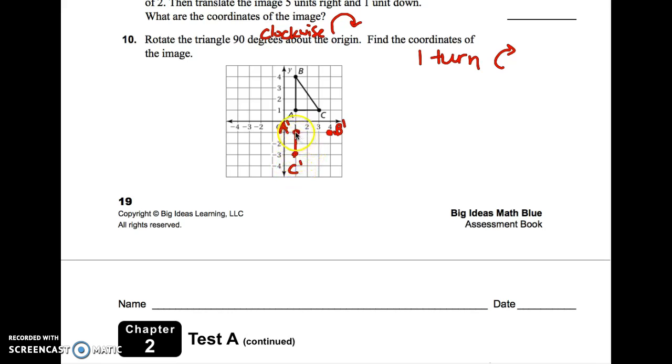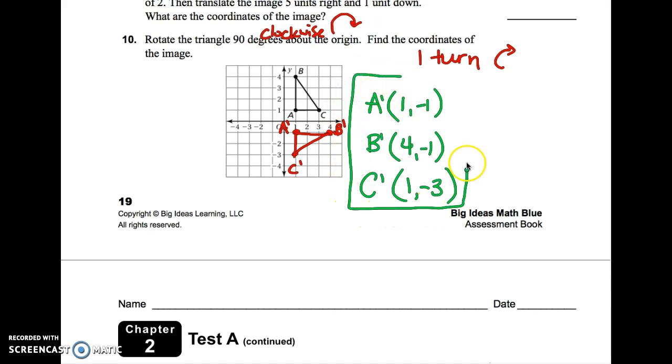and then C prime will be right here. Now, they don't just want you to draw it. They want you to find the coordinates of the image. So A prime is located at 1, negative 1. You go right 1 and then down 1. B prime is located at 4, negative 1. So you go right 4 and then down 1. And C prime is located at 1, negative 3. So you go right 1 and down 3. And then this would be your final answer.